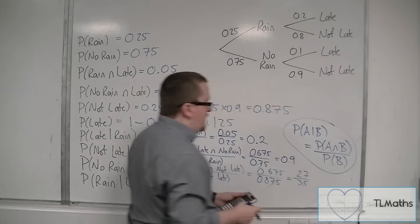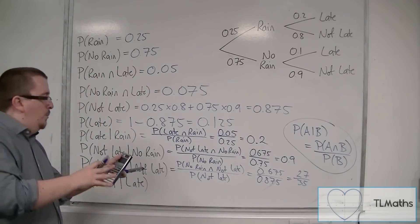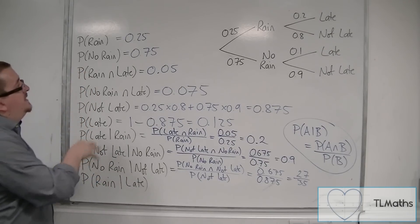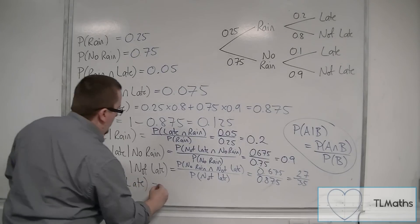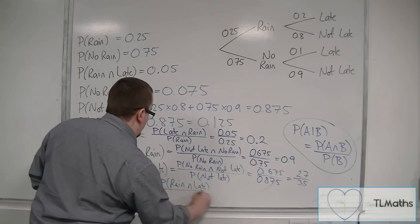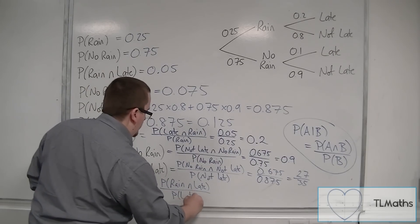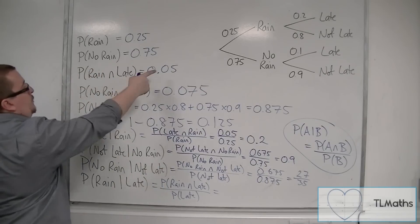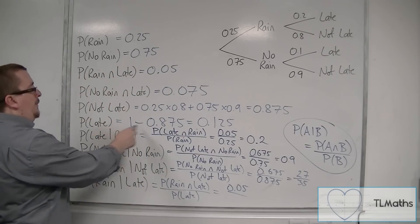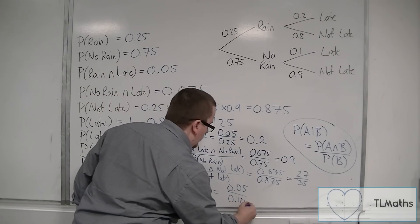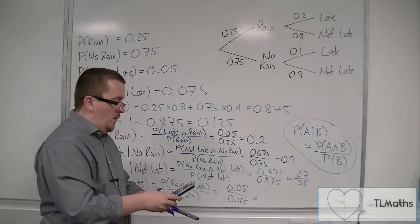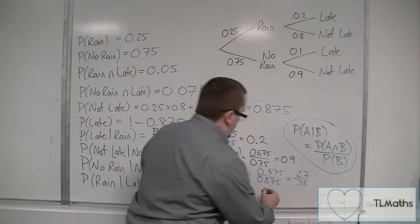I'm just going to leave it like that — the decimal equivalent is about 0.77. And then lastly, the probability of it raining given that they were late: that would be the probability of it raining and being late, divided by the probability of being late. Rain and late was 0.05, and the probability of being late was 0.125. So 0.05 divided by 0.125 gets us two fifths, or 0.4.